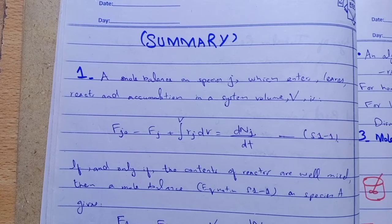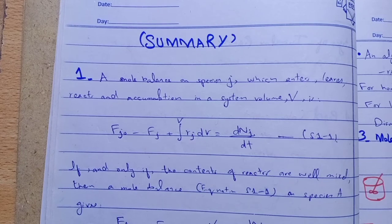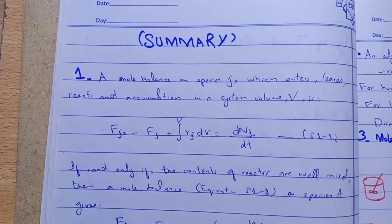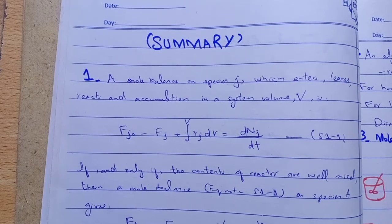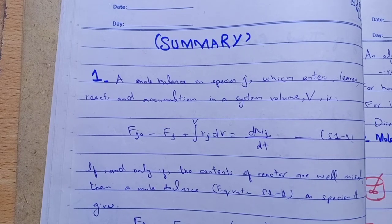∫V rj dV, this is the generation term for variable volume. Fj0 is the volumetric flow rate, the initial flow rate of species j, and Fj is the outlet, and ∫rj dV is the generation term equals dNj/dt, change in number of moles of species j with respect to time. This is the accumulation term.